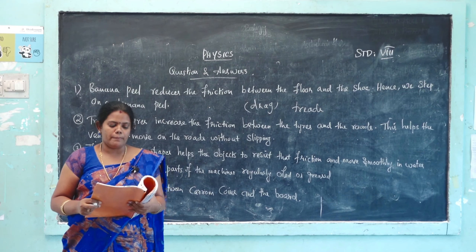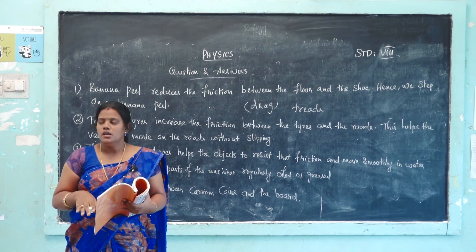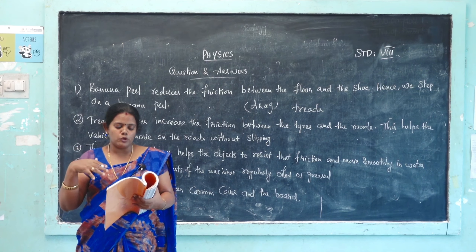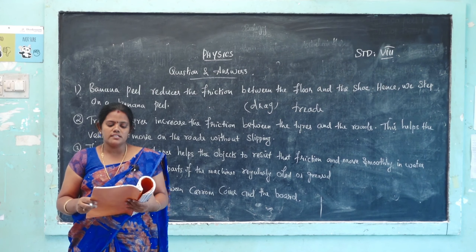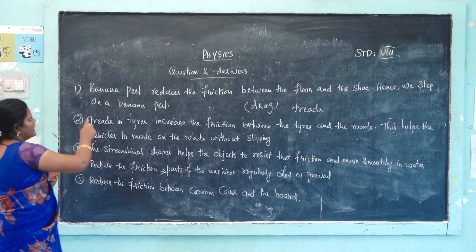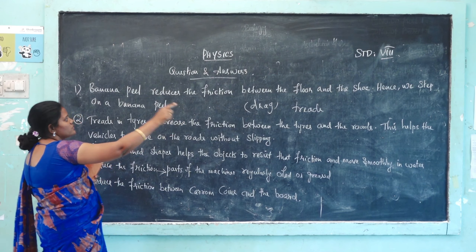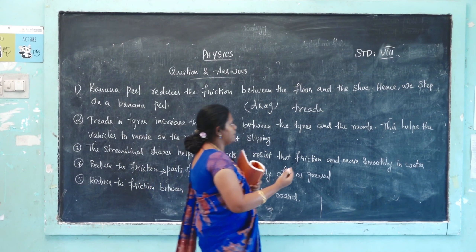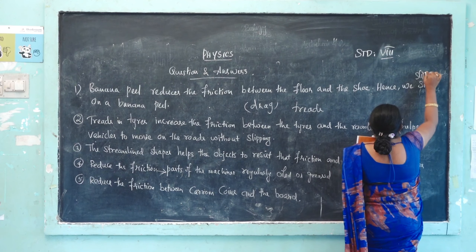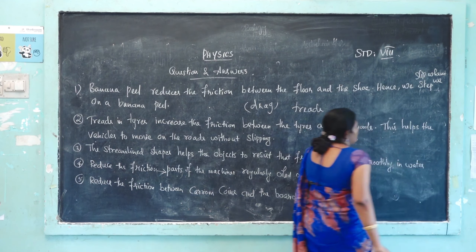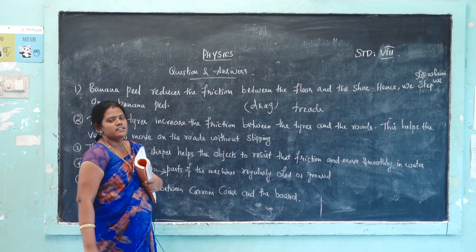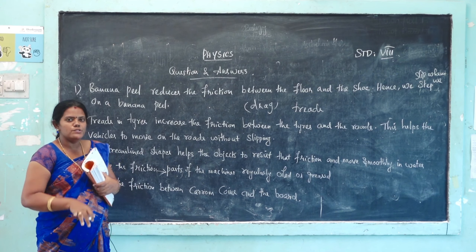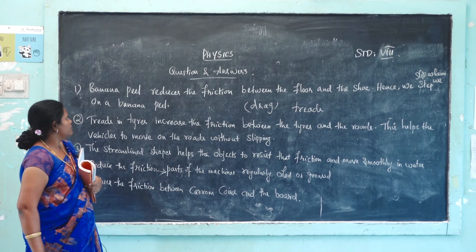Now for reasoning questions. First: why do we slip when we step on a banana peel? When you step on a banana peel, you slip because the banana peel reduces the friction between the floor and the shoe. Hence, when we step on a banana peel, we slip.